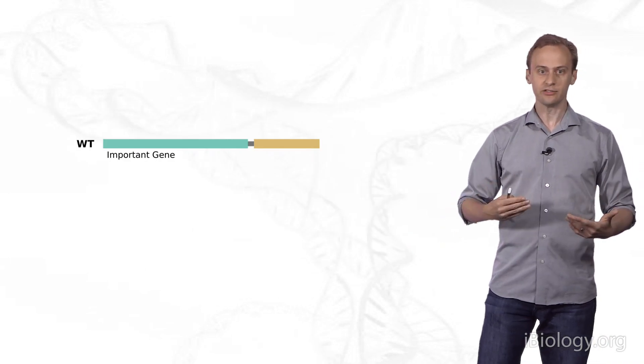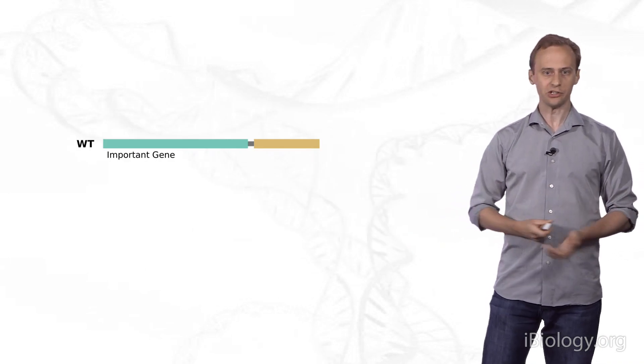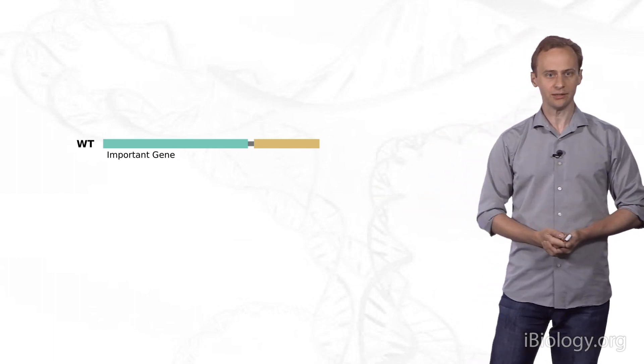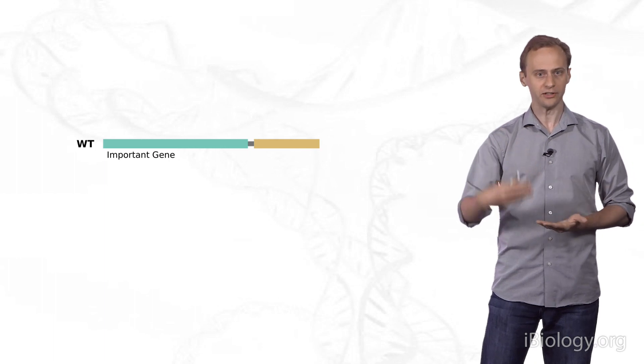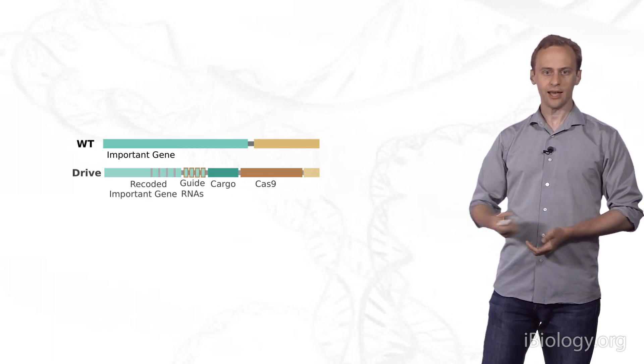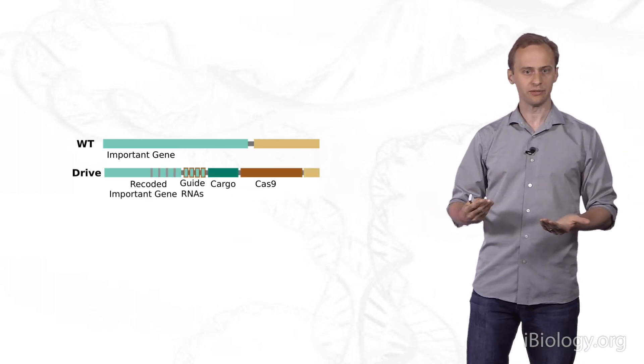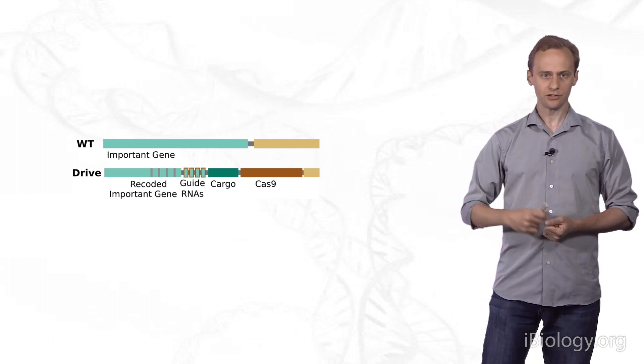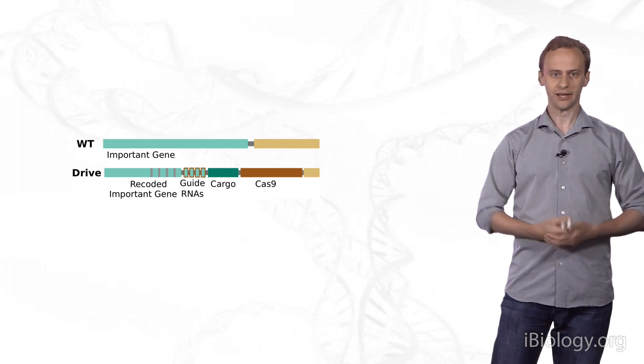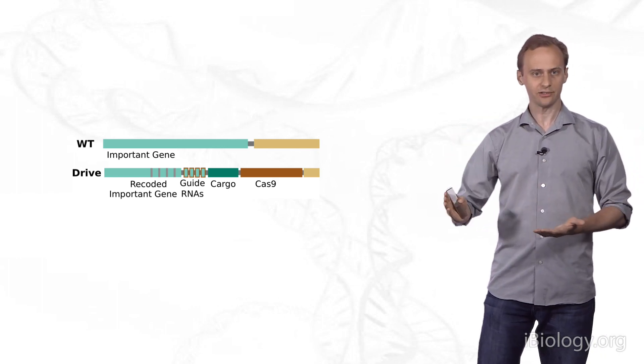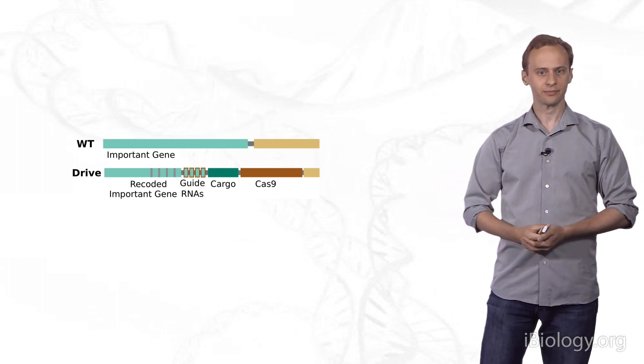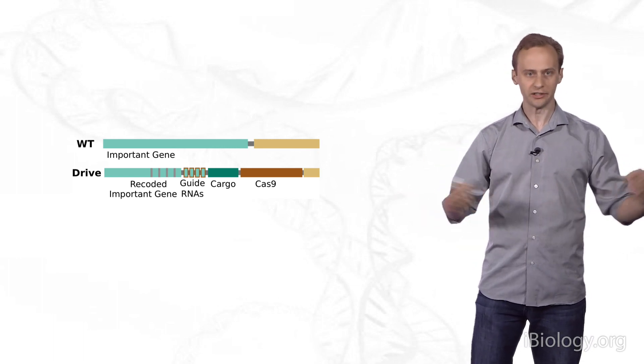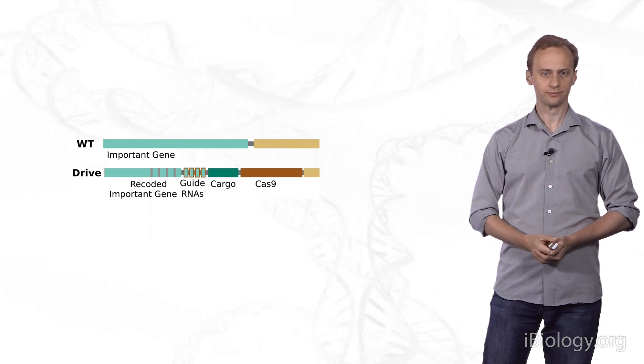Mechanistically, we can build these using CRISPR as our genome editing tool of choice. To make them stable, we typically want to identify an important gene that is something that is important for the fitness of the organism. We then build a recoded version of that important gene, wherein we change the codon usage to remove target sites for CRISPR. We then encode guide RNAs targeting the original sites, and a CRISPR nuclease, and whatever gene we want to spread through the population.